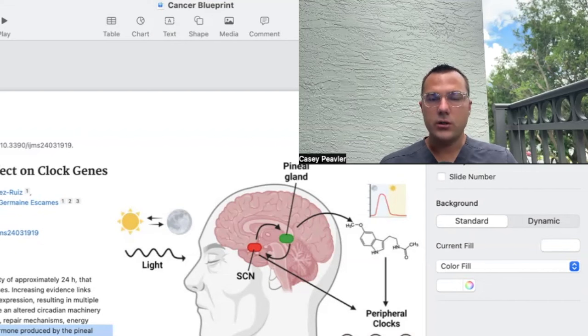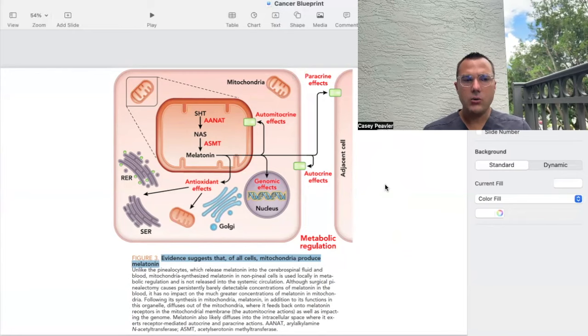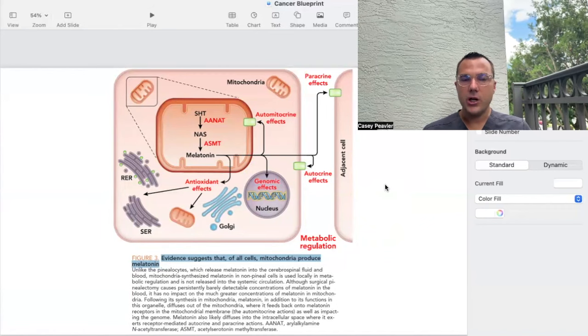As a matter of fact, probably the majority of melatonin is made outside the pineal gland. This is a diagram of how melatonin is created in every single mitochondria, discovered not too long ago. What they found was every mitochondria is able to take acetyl-CoA and convert it to 5-HT or serotonin. Then through a variety of enzymatic steps, the AANAT and ASMT enzymes, you're able to convert serotonin into melatonin.